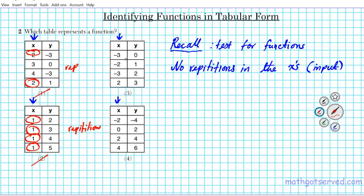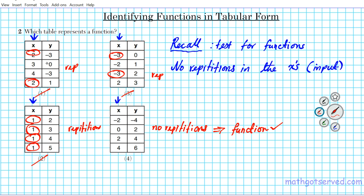Option three: negative 3 appears repeated, so you have the same input going to two different outputs — not a function. Option four: x-values are negative 2, 0, 2, 4 — no repetitions. That's exactly what we want; this table represents a function. If you're given a table, just focus on the x-values and make sure there are no repetitions.